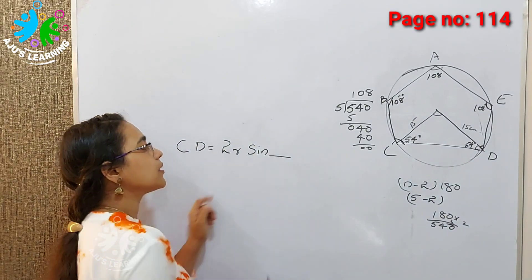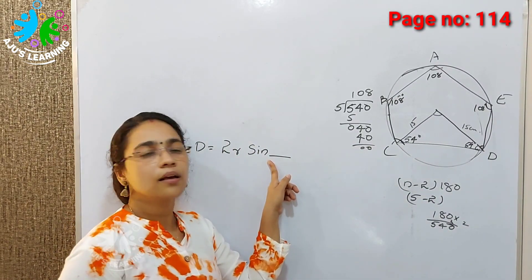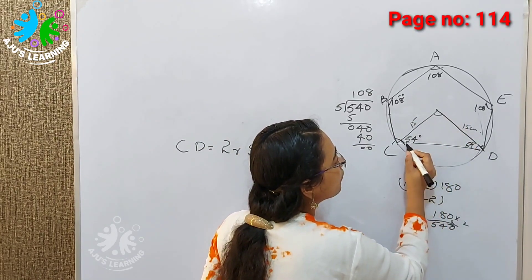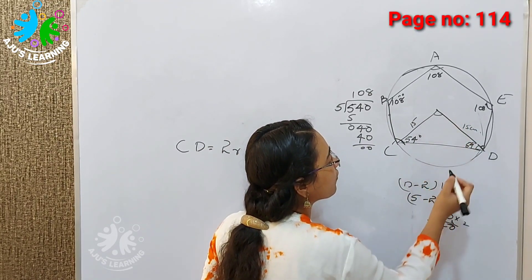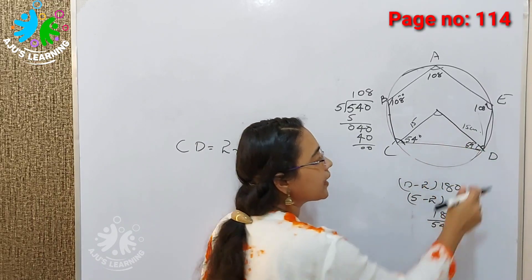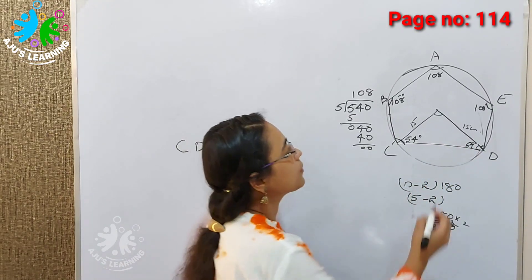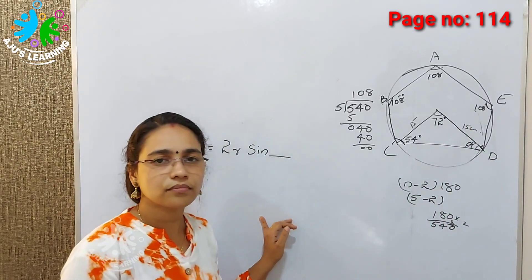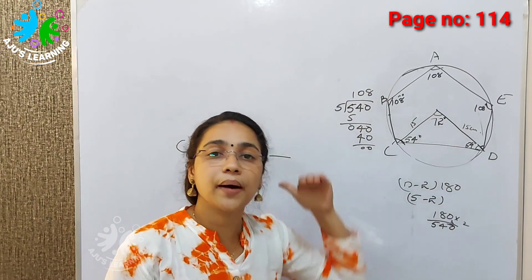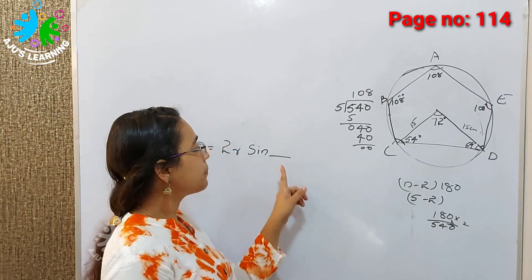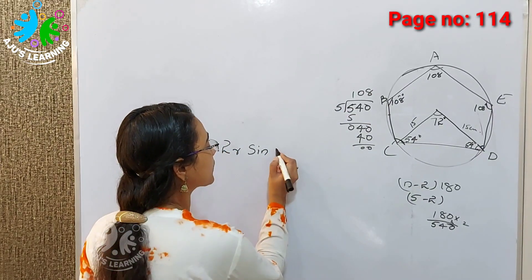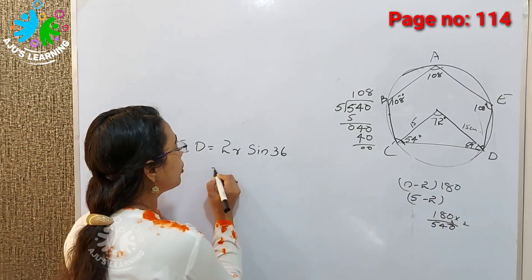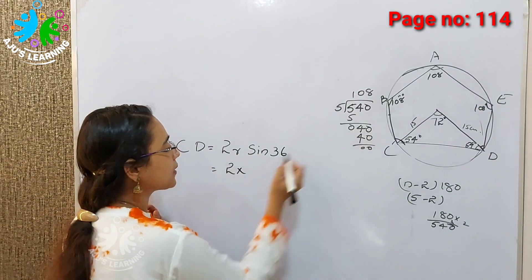The side CD equals 2R sine of the central angle. The central angle is 72 degrees — so the half-angle is 36 degrees — and sine 36 is used. With R equals 15.